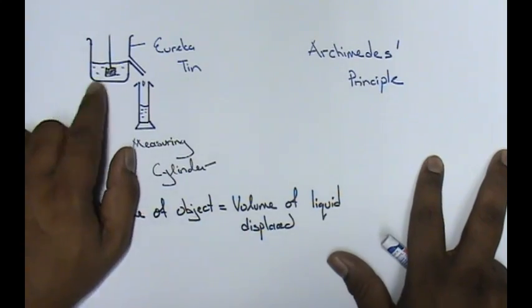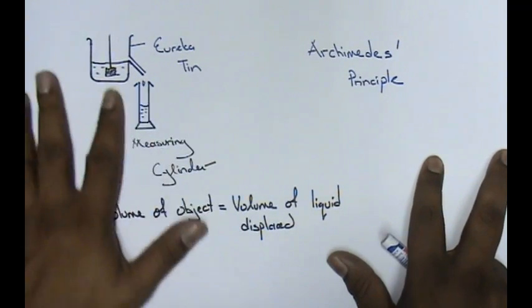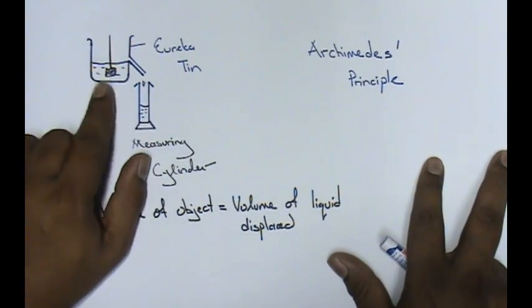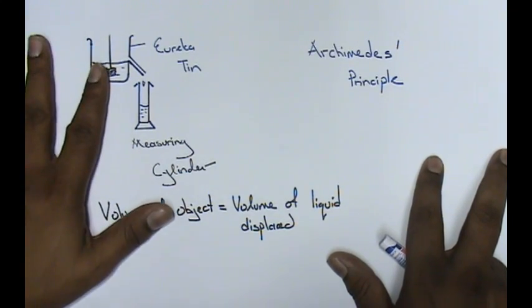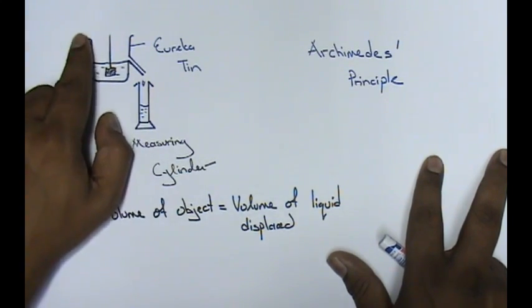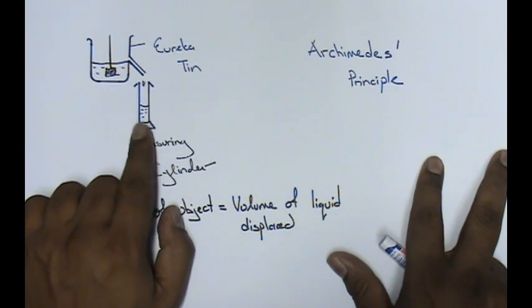I've already drawn this for you. Here you have your Eureka tin - some places call it a Eureka can, some call it a Eureka tin, either one. Your Eureka tin is here and below it you have a measuring cylinder.